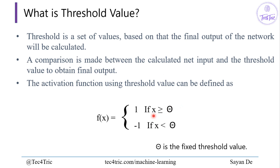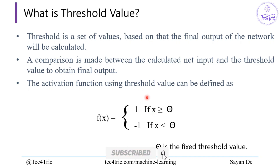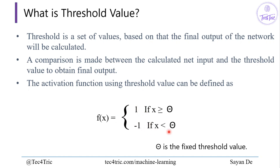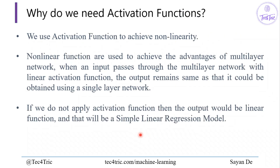Taking the previous example: if our answer x is greater than or equal to 5 (where theta is the fixed threshold value, in this example theta equals 5), then only produce the output; otherwise not — giving outputs like true/false or 1/0.